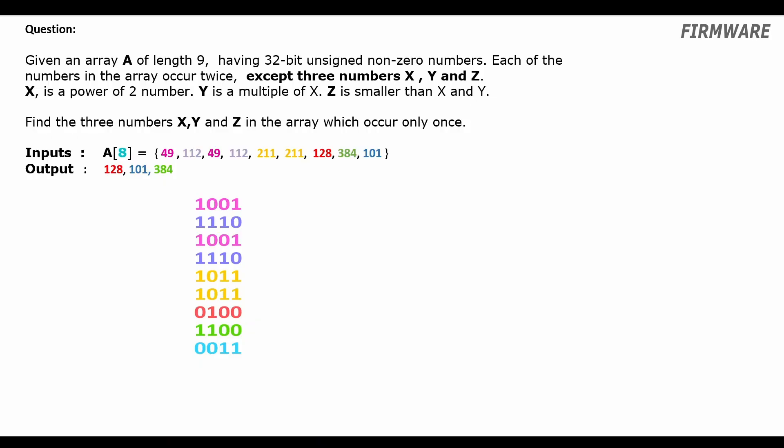Hey guys, today we have a spin-off problem to what we had solved in our previous episode. Here we have an array of 9 numbers which are non-zero and positive and each number in the array occur twice except 3 numbers which occur only once.